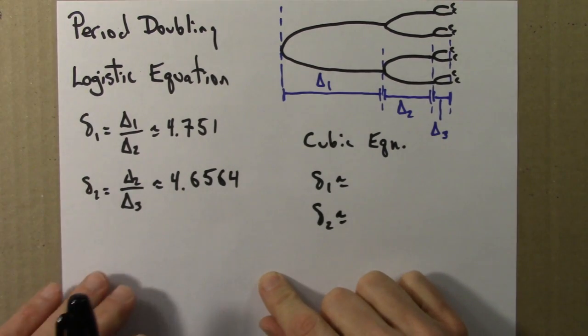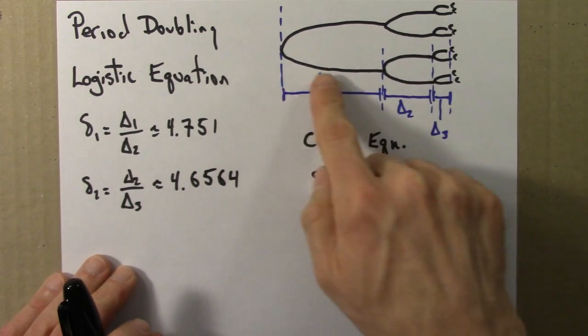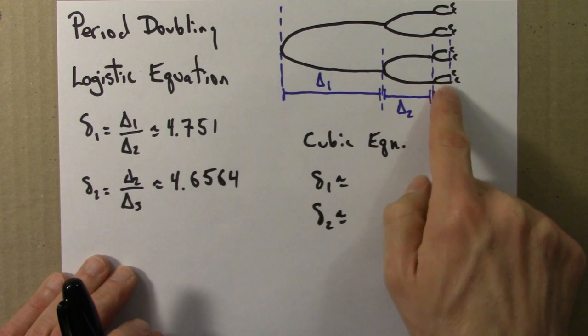So we've been looking at period doubling, and here's again this picture. We have period doubling from 2 to 4, 4 to 8, and so on.